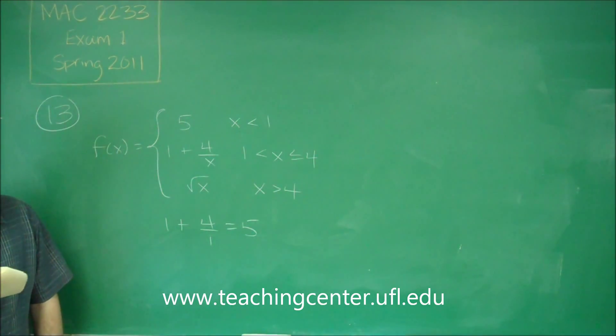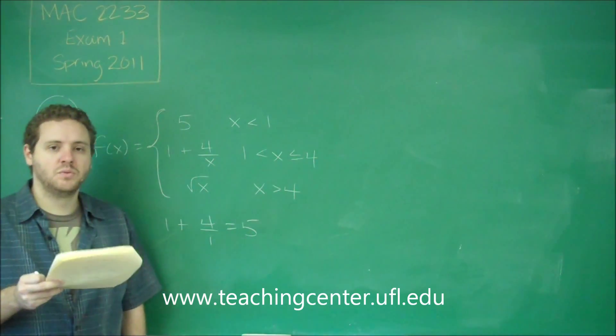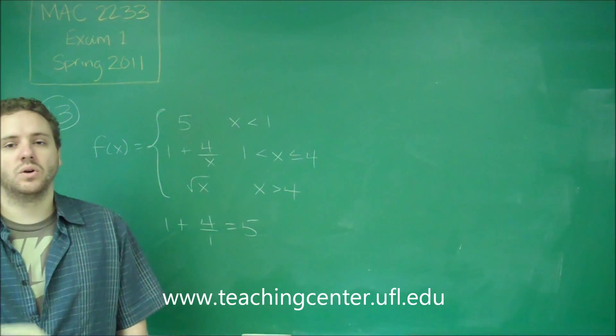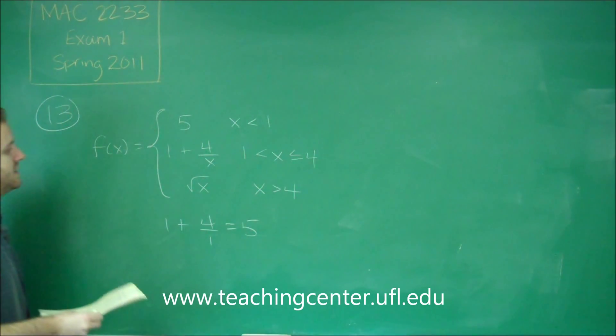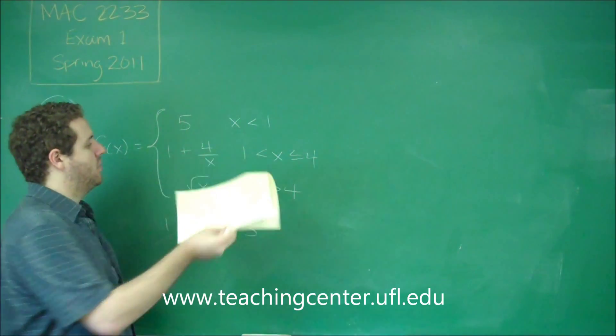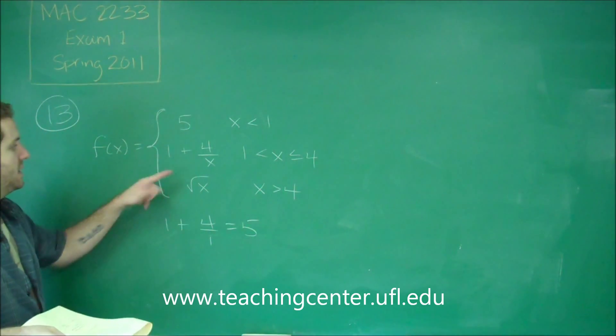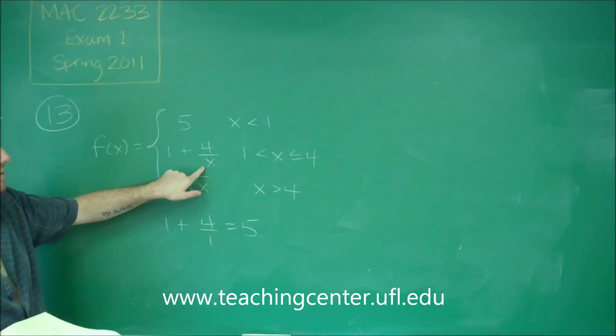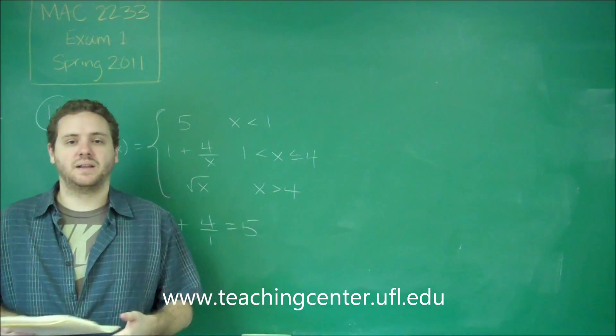Okay, let's think about non-removable discontinuity. So non-removable discontinuity, that's jump or asymptote. Well, it's impossible for us to have an asymptote anywhere on this graph, because the only place we could have is if we were divided by 0 here, but 0 isn't part of that domain.